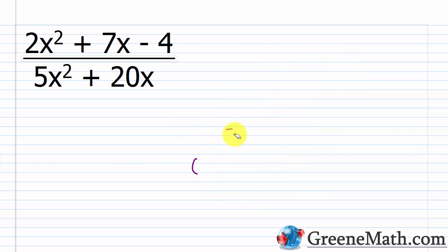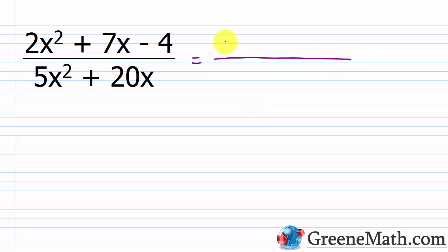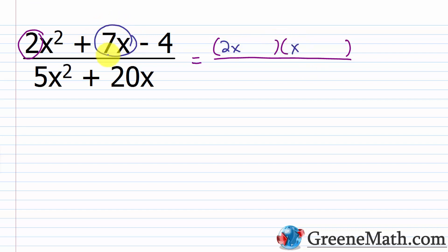For the expression (2x² + 7x - 4) over (5x² + 20x), I'm going to factor the numerator into the product of two binomials and the denominator into a monomial times a binomial, then look to cancel. For the numerator, I'll use reverse FOIL since 2 is prime. 2x² can only come from 2x times x, so I start with (2x)(x). Now I need to figure out the middle term, 7x.